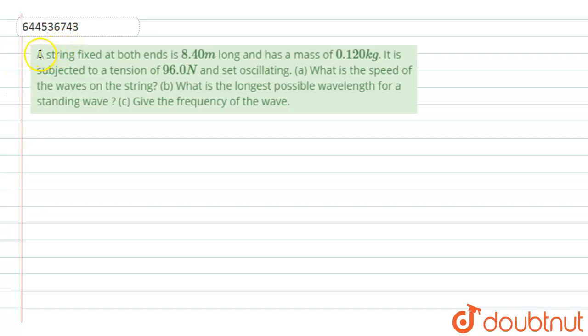In this question it is given that a string fixed at both ends is 8.4 meter long and has a mass of 0.120 kg. It is subjected to a tension of 96.0 N and set oscillating.